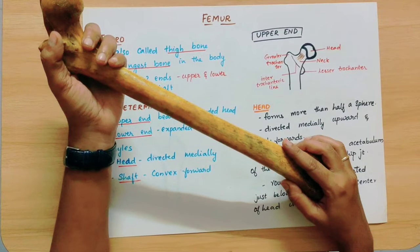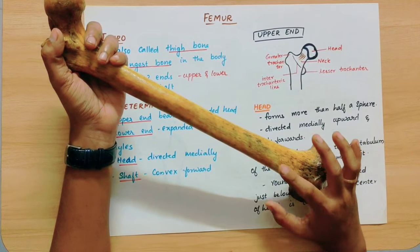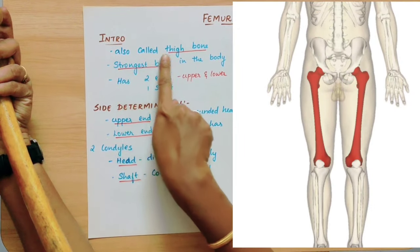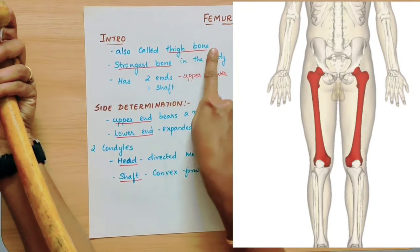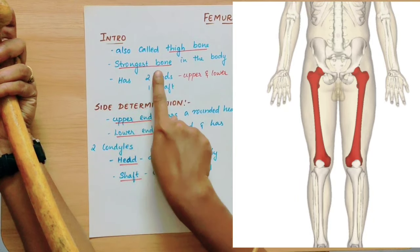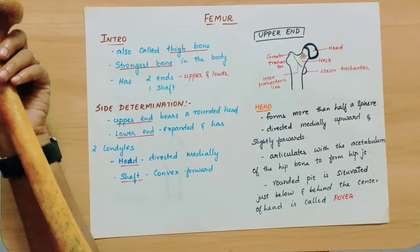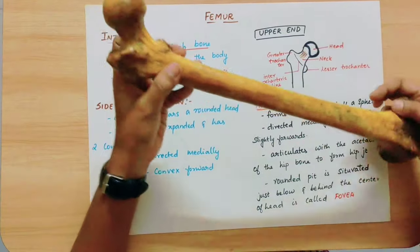The femur is also called the thigh bone. It is the strongest bone in the body. It has two ends and one shaft.